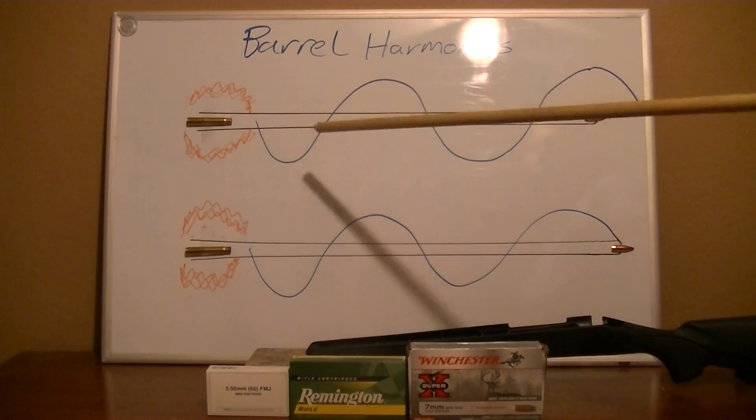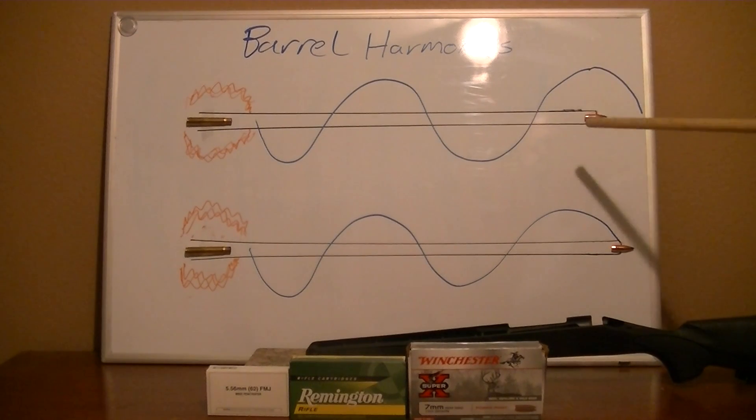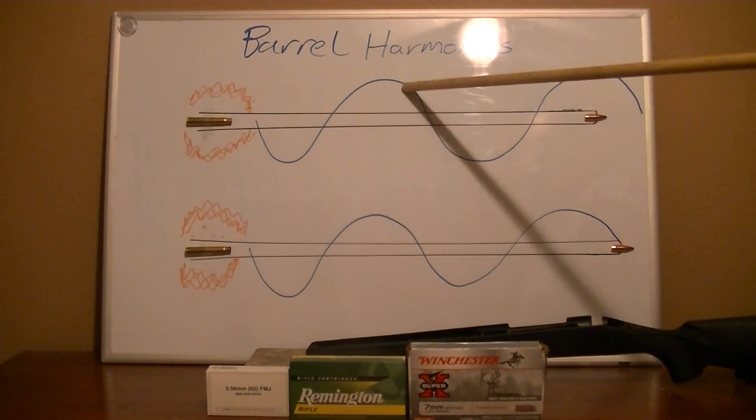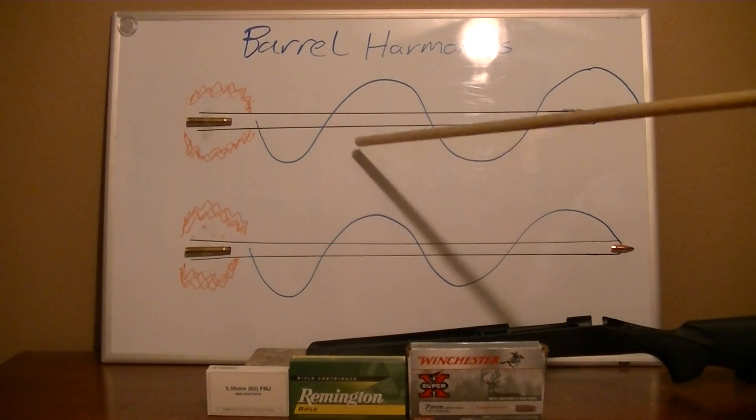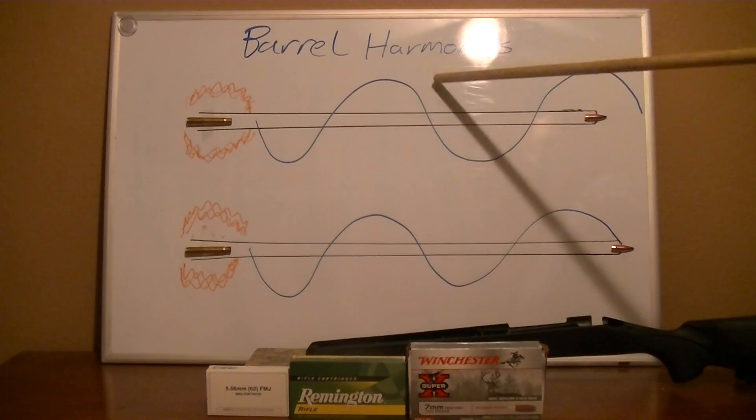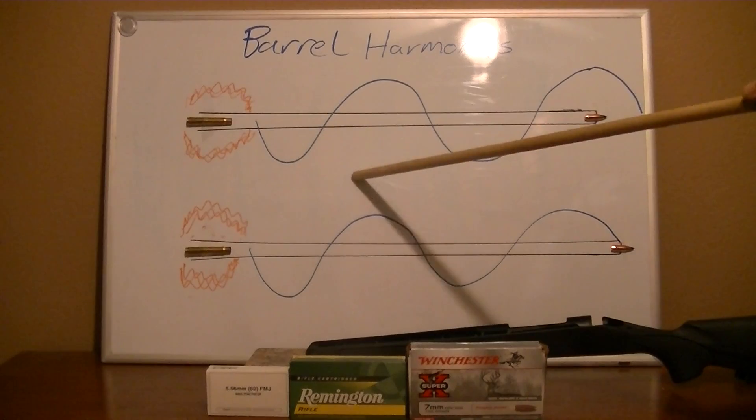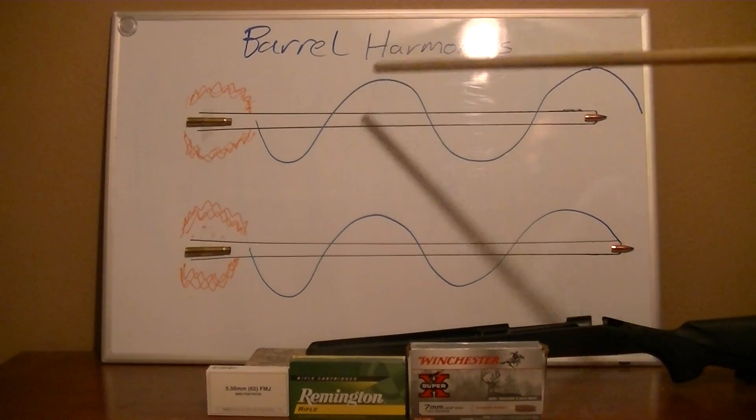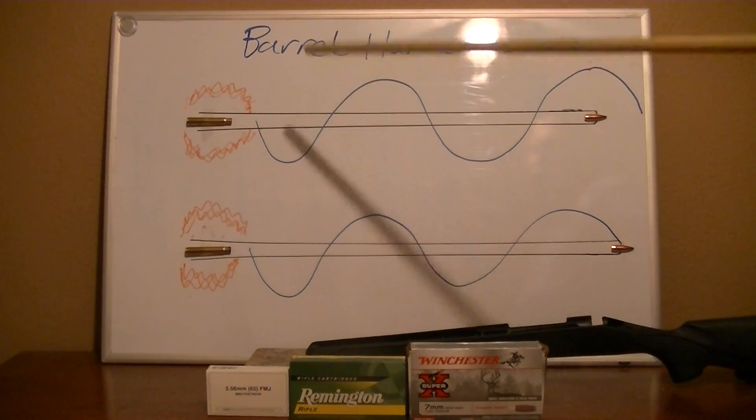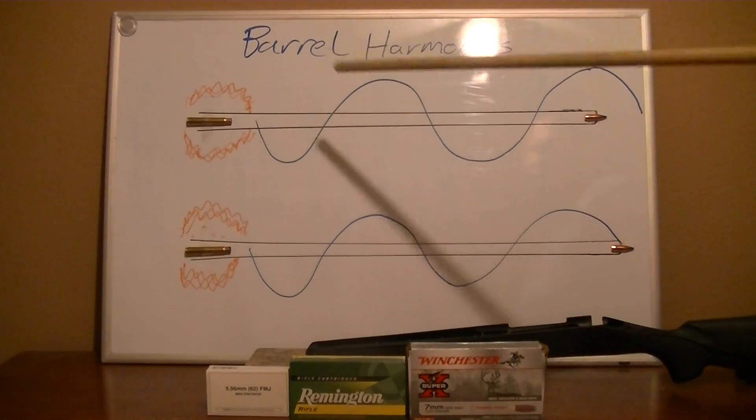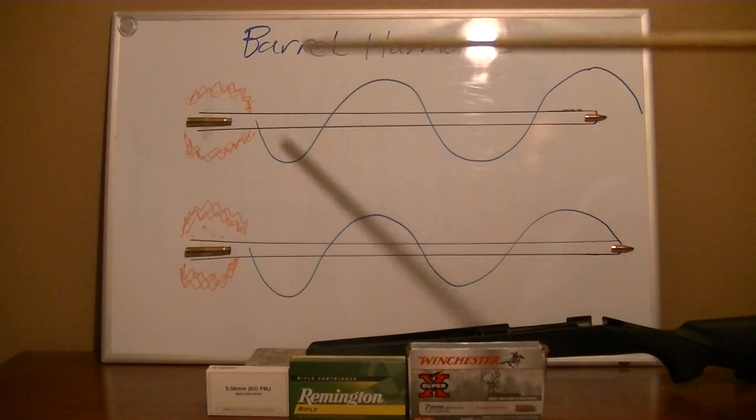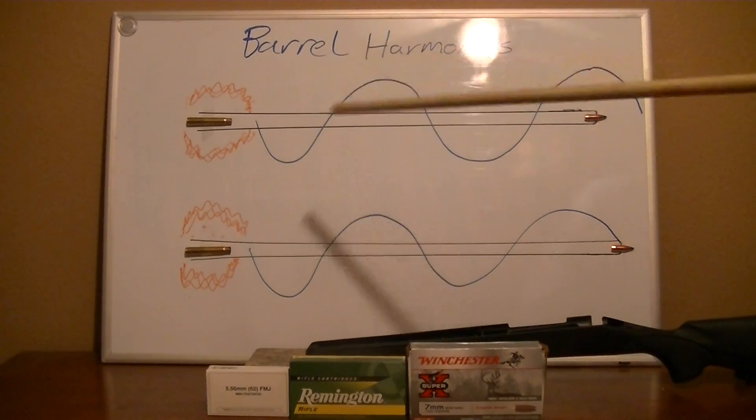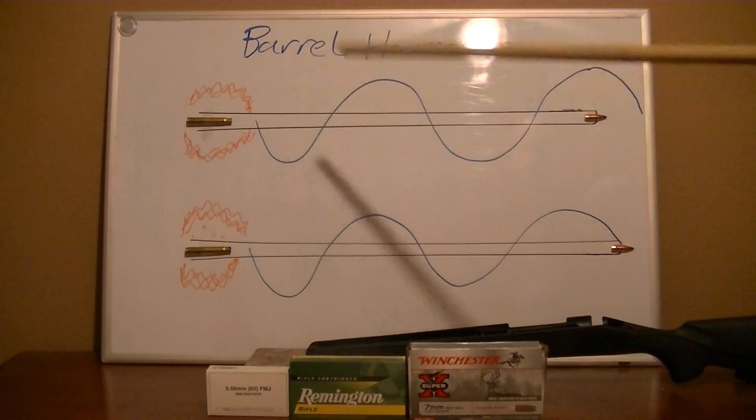So your barrel is vibrating, and when your bullet leaves the end of the barrel, if it's in the middle of the roughest part of the vibration, you're going to have holes in your target all over the place, all spread out. If you keep shooting, they're going to be in a circular-type pattern, and that's because your barrel, when it vibrates, vibrates in a circle.